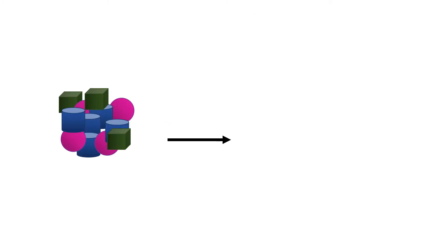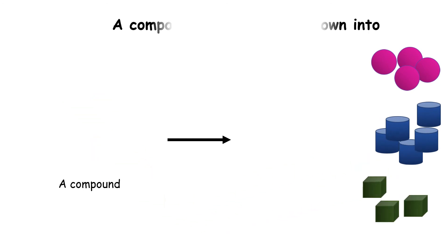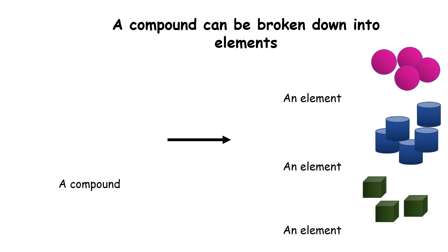Another example. This is a compound. This type of compound is made up of three elements. The purple element, the blue element, and the green element.